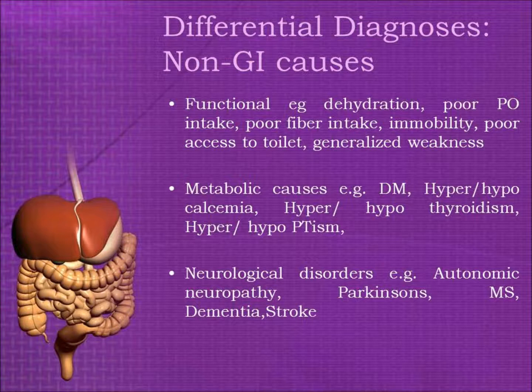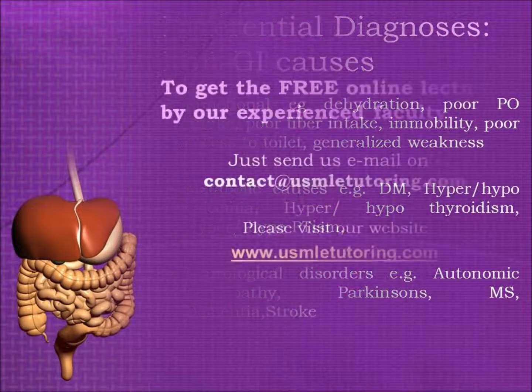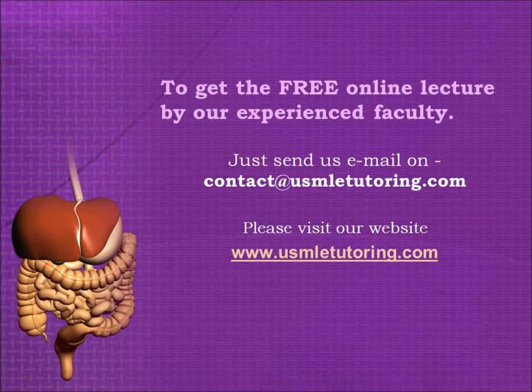Metabolic causes include, for example, diabetes mellitus, hyper- or hypocalcemia, hyper- or hypothyroidism, and hyper- or hypopituitarism. Neurological disorders include, for example, autonomic neuropathy, Parkinson's, multiple sclerosis, dementia, and stroke.